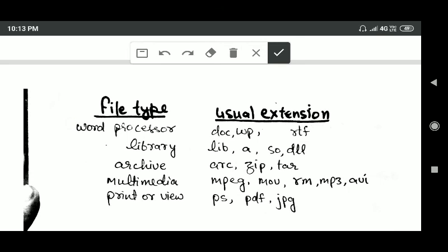If a file is of type word processor, then its usual extension is doc, wpr, or rtf. And for a library type of file, the usual extension is lib, so, or dll.